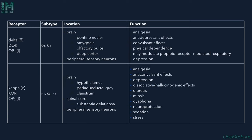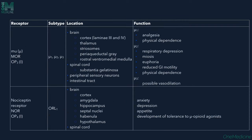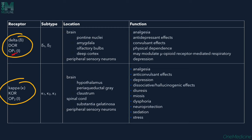The opioid receptors include: delta receptor (opioid 1) — present in pontine nuclei, amygdala, olfactory bulbs, and deep cortex — involved in analgesia, antidepressant effects, convulsant effects, physical dependence, and modulation of respiratory depression. Higher doses of opioids cause bradypnea or respiratory depression mainly through the delta (opioid 1) receptors.